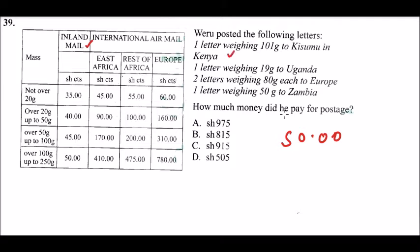The second letter is 19 grams to Uganda. This is not over 20 grams, so it falls in the first weight category. Because Uganda is in East Africa, he paid 45 shillings for that letter.